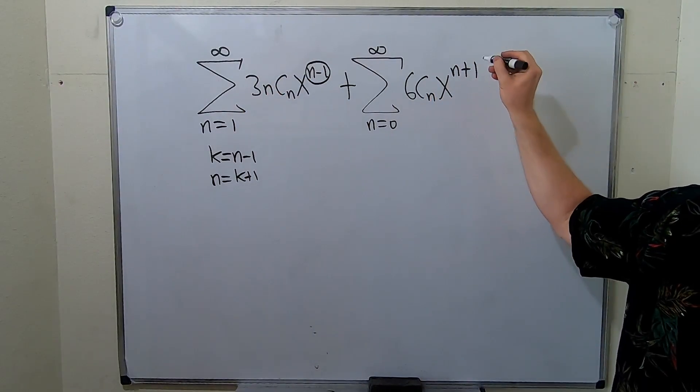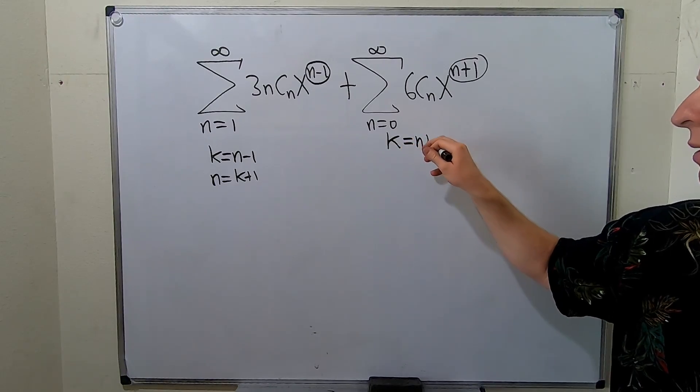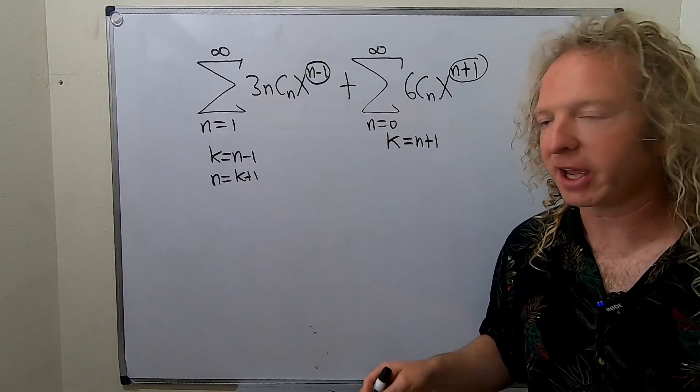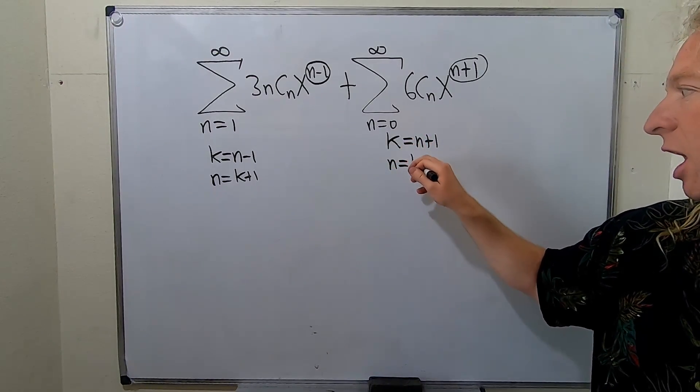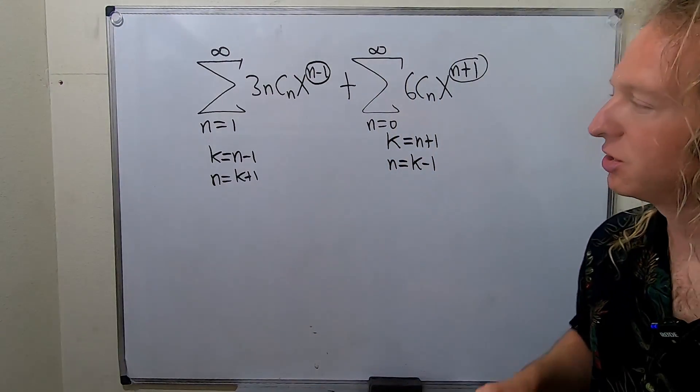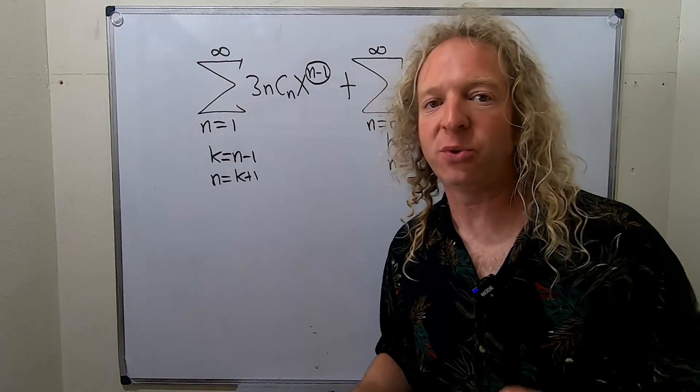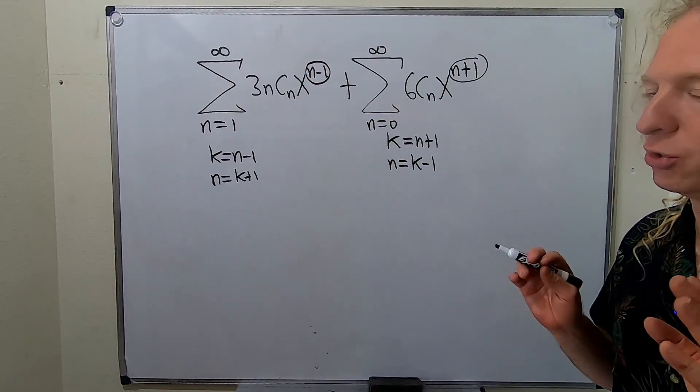Then you do it again here. So k is equal to n plus 1. Then you solve for n. So n is equal to k minus 1. By the way, this is called shifting the index of the summation. This is a super important technique. You can do it in your head. Some people do it in their head. I like to show the work.